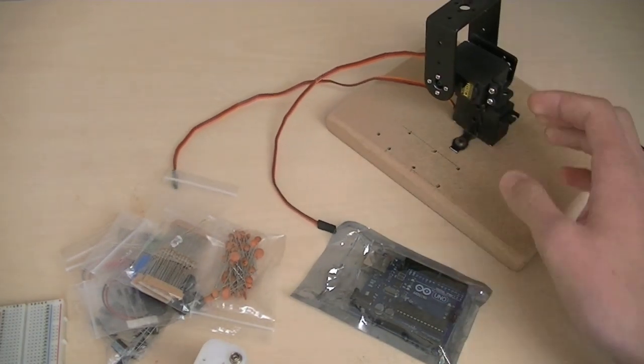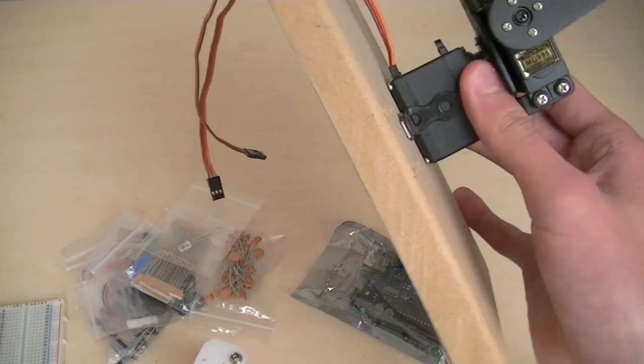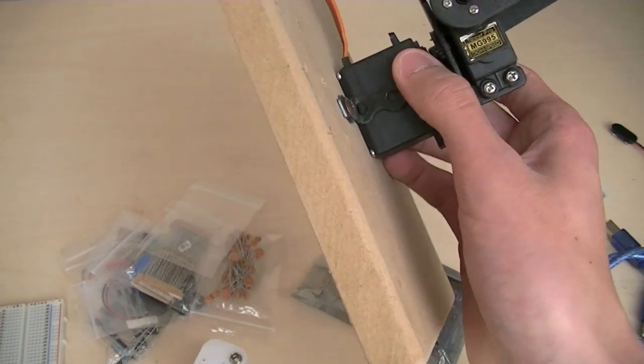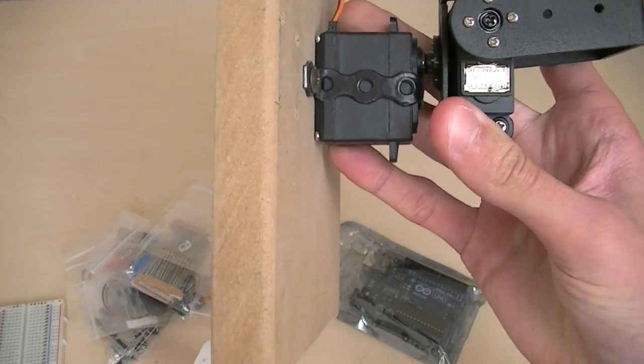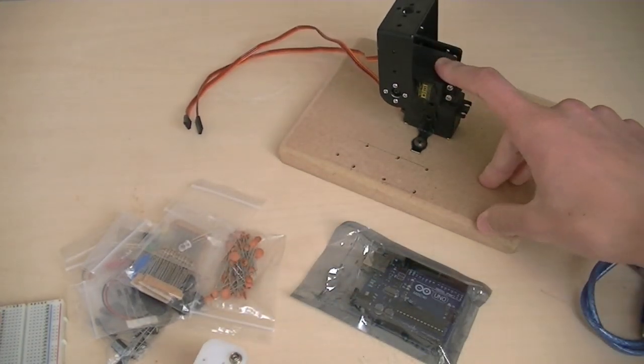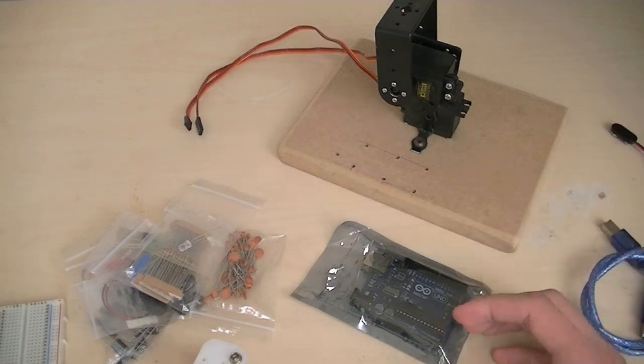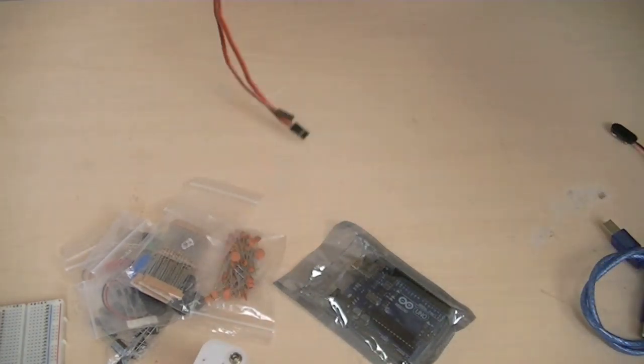So basically I ordered all the bits off eBay, including this pan and tilt servo mount. These are the Tower Pro MG995 servos. You have to be careful which ones you get, as some are fake and not of very good quality at all, but these I believe are real.